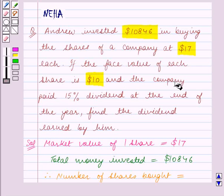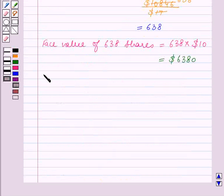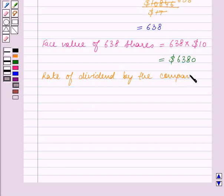Now the company paid 15% dividend at the end of the year. So rate of dividend by the company is equal to 15%.